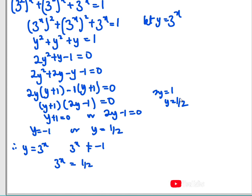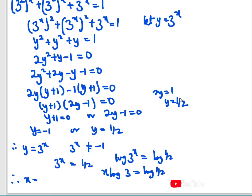Applying logarithm to both sides, we have log of 3 to the power of x equals log of 1/2. Taking the power to the front, we have x times log 3 equals log of 1/2, and finally x equals log(1/2) base 3 — because of the rule of logarithms that says log a over log b is the same as log a base b.